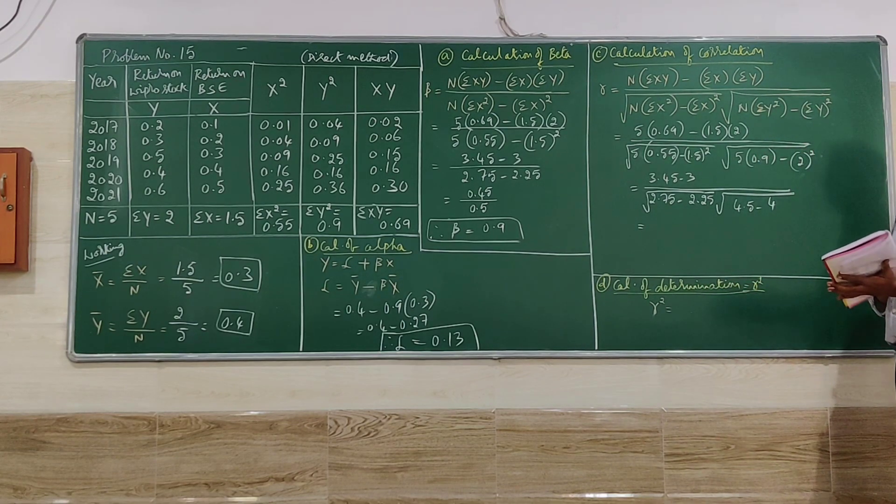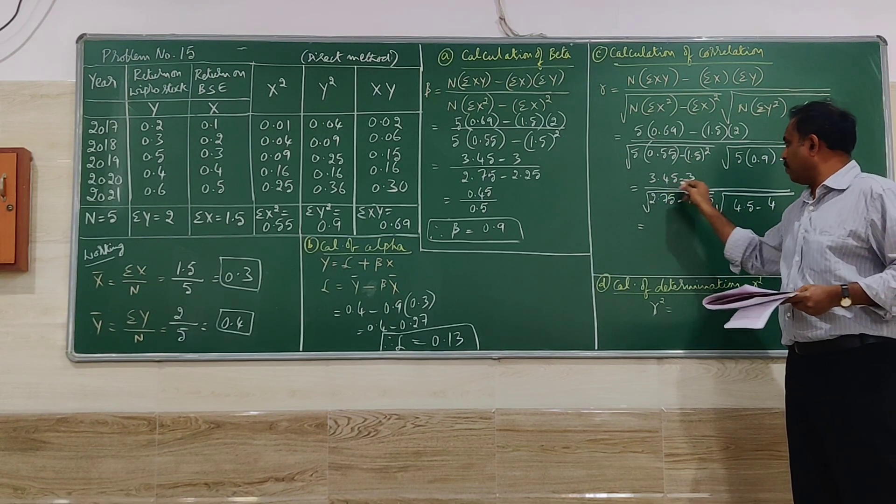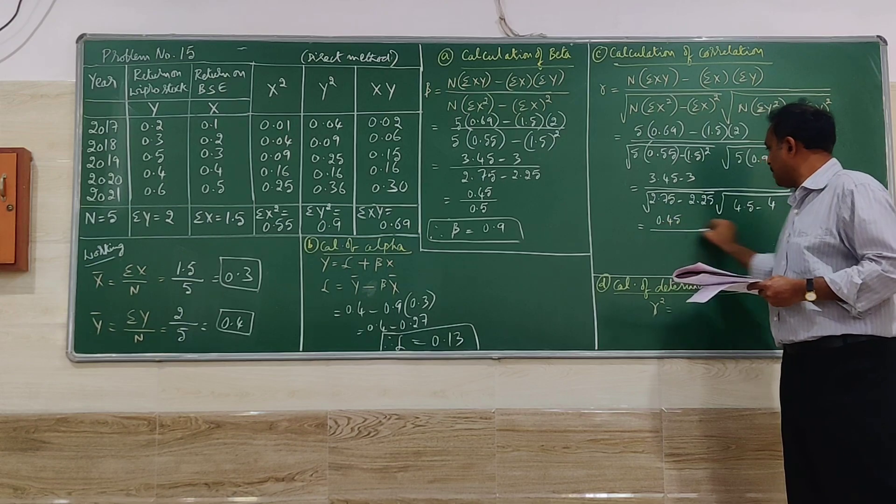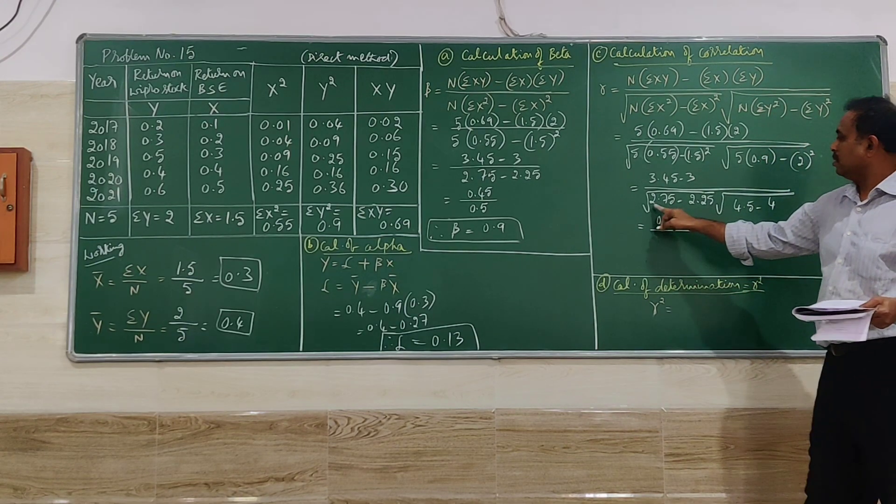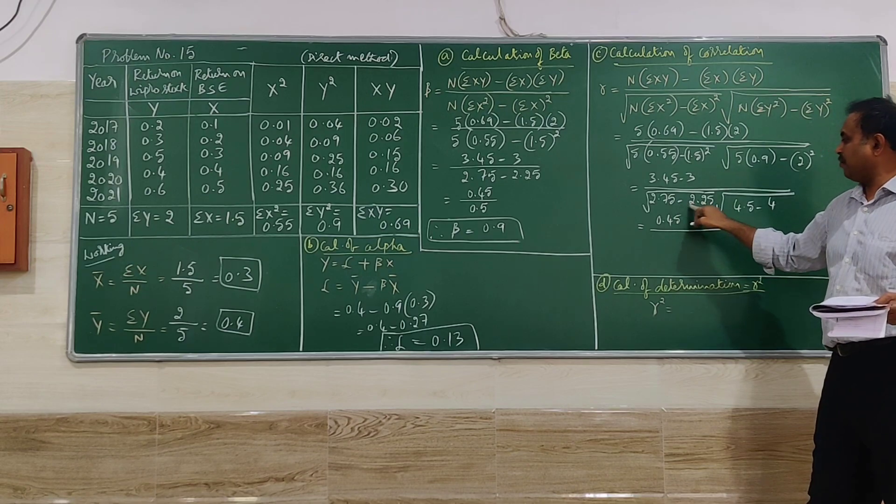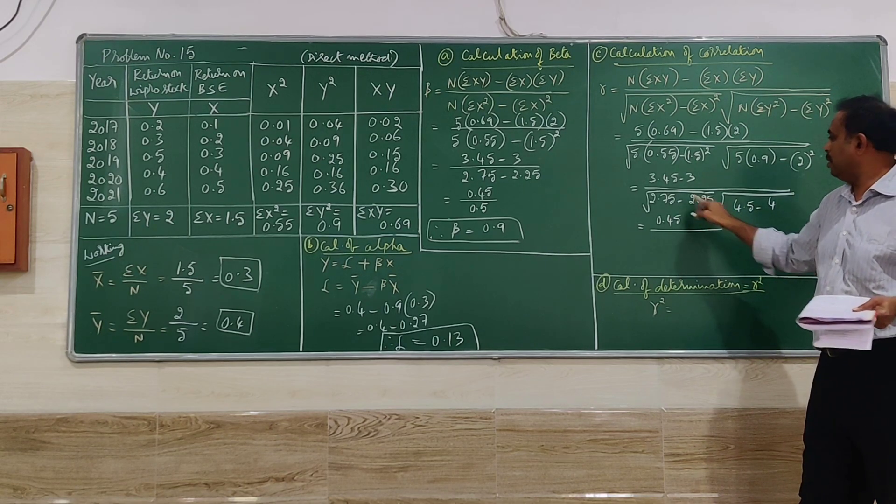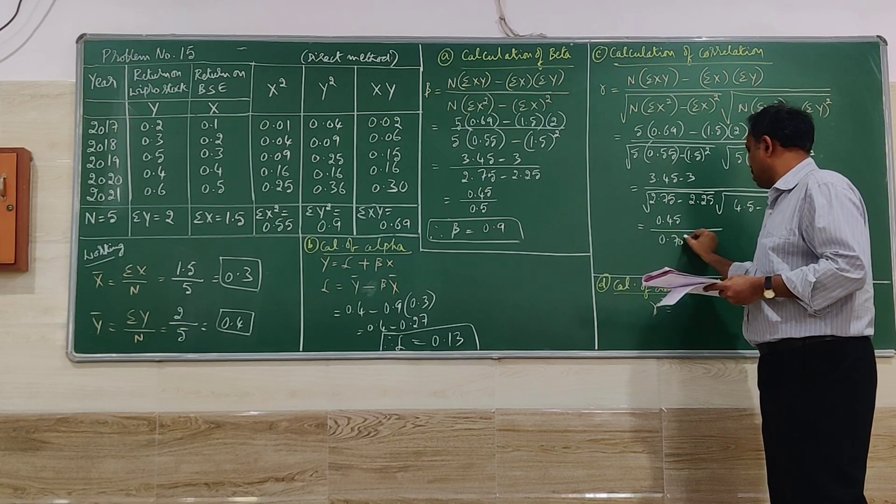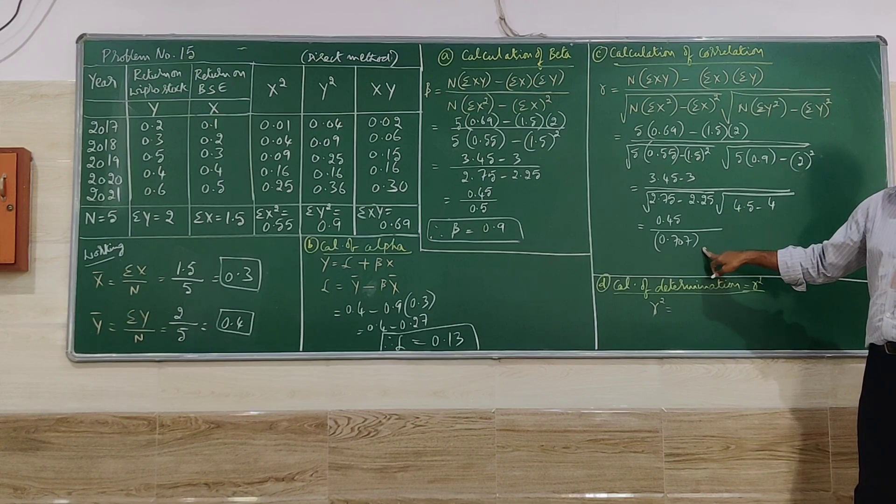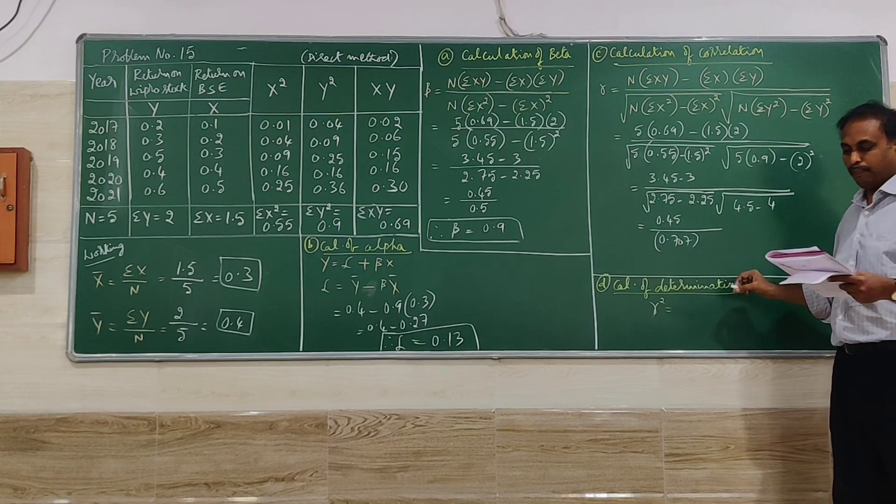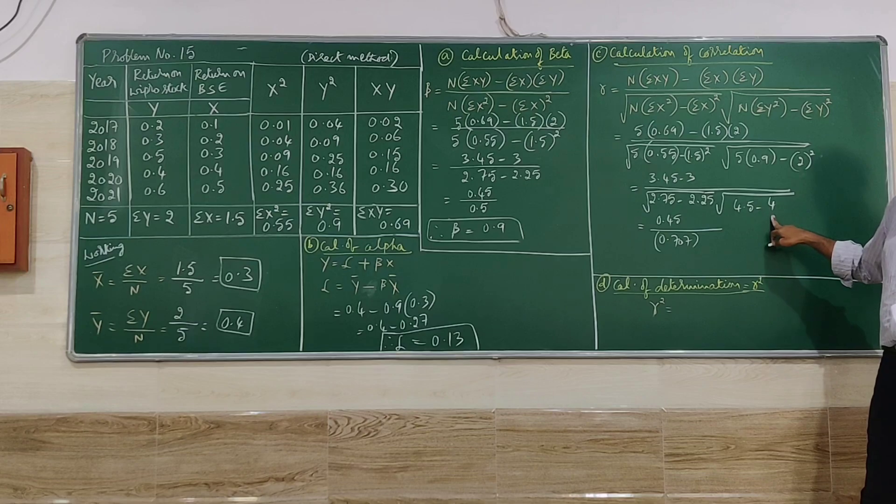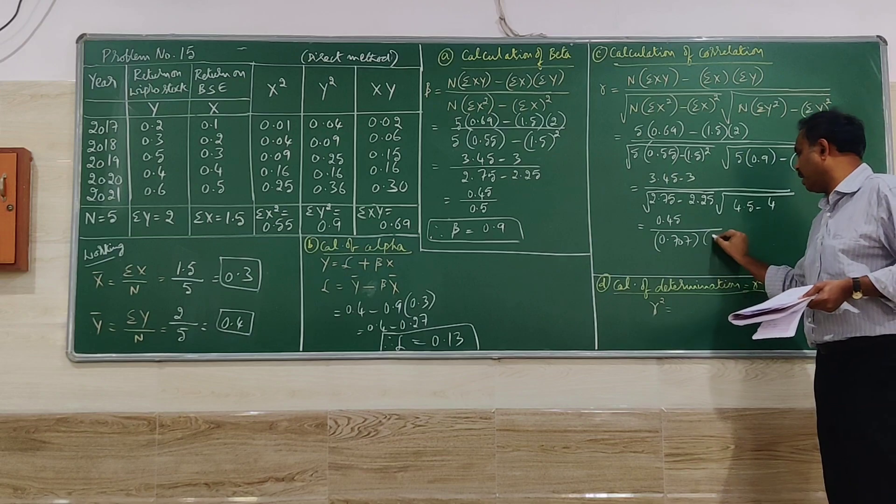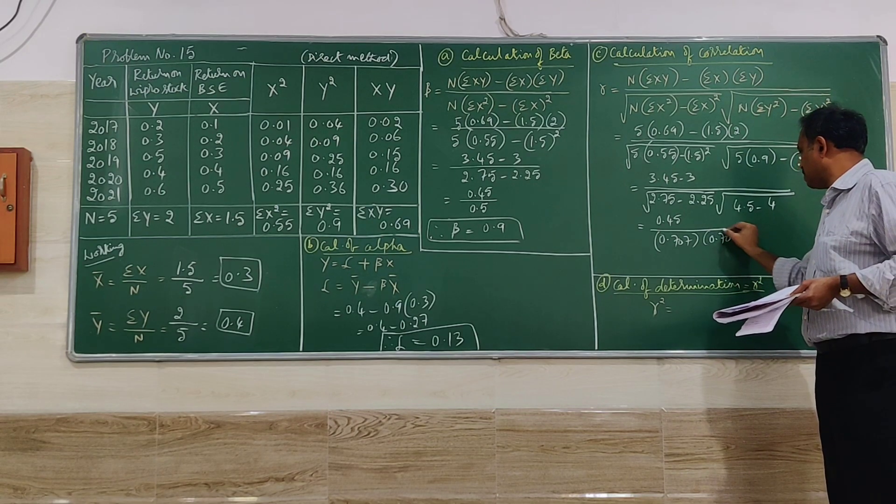So we have to be very careful. Further, 3.45 minus 3, 0.45 divided by 2.75 minus 2.25 is 0.5. 0.5 square root is 0.707. Again, 4.5 minus 4 is 0.5 again. When you put a square root, you will get again 0.707.